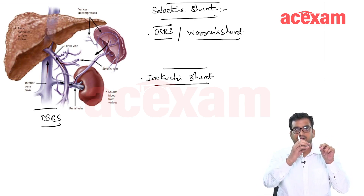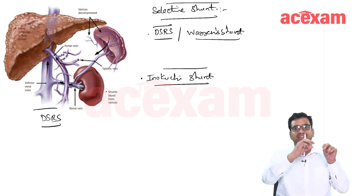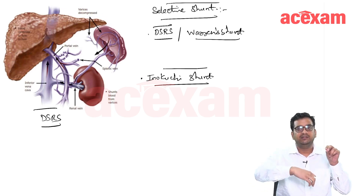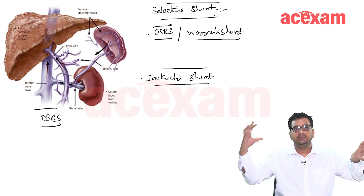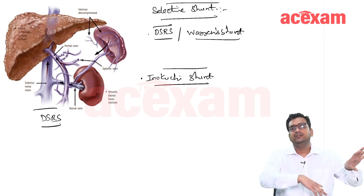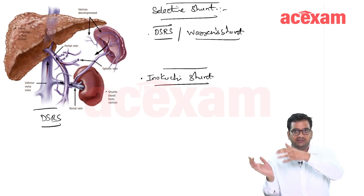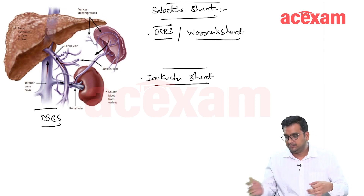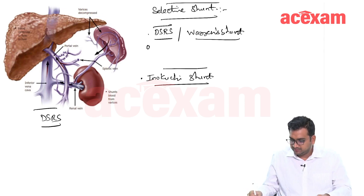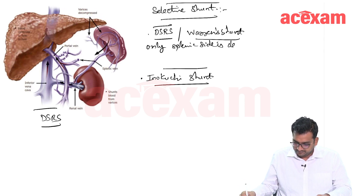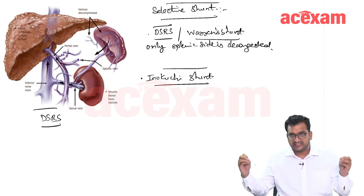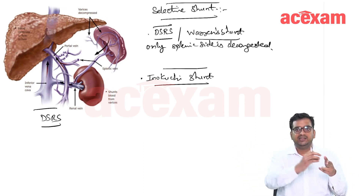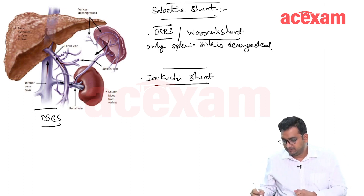So the splenomegaly and problems related to splenomegaly will be resolved with DSRS. In DSRS, only the splenic side is decongested. The whole splenic vein is first dissected, divided on the portal side, and the distal end is taken down and anastomosed with the renal vein.